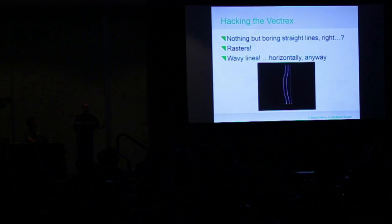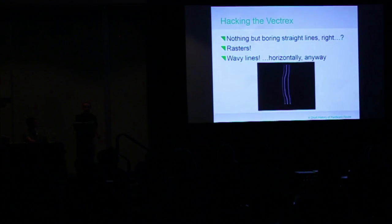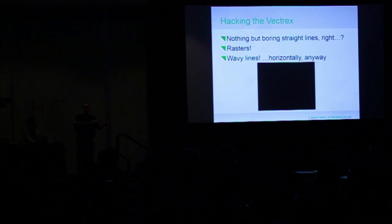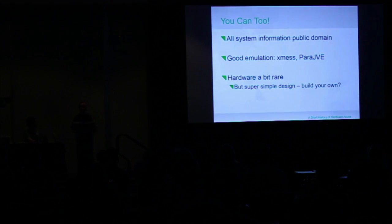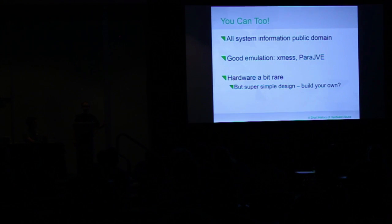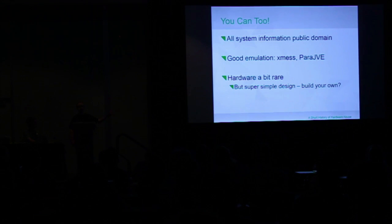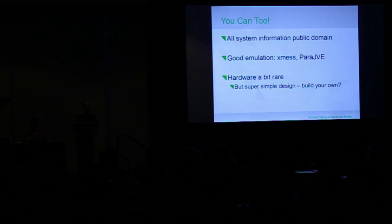You can get beautiful things by varying how fast things are moving along the X speed dimension, getting beautiful twisters. The beautiful thing about this machine is that everything has been released officially and legally into the public domain — all the documentation, all the software, everything. There are two really good emulators. The hardware is a bit rare, but it's really super simple. Just build your own.